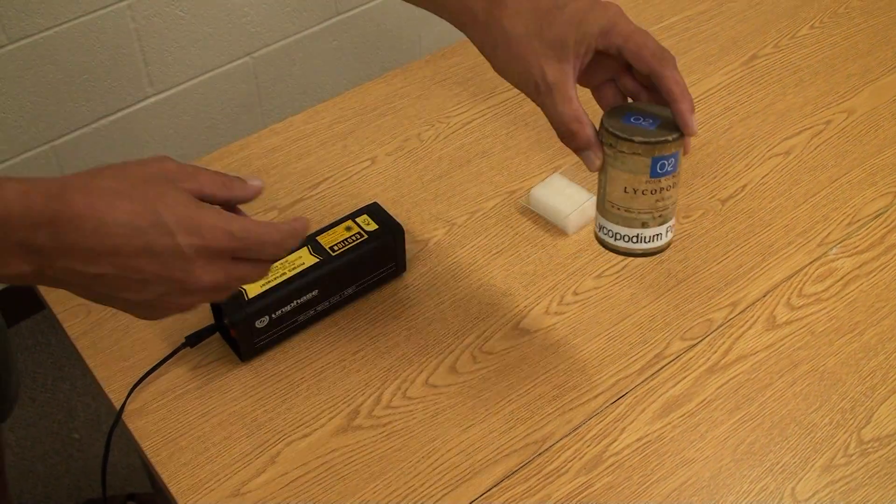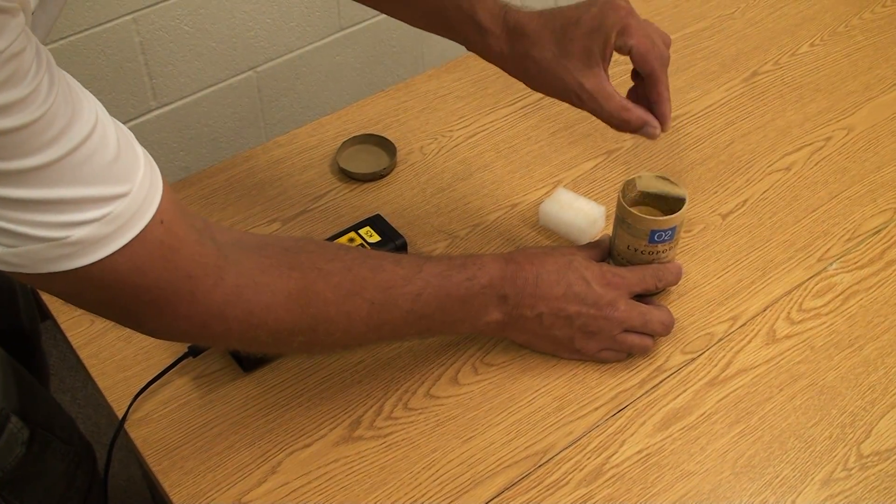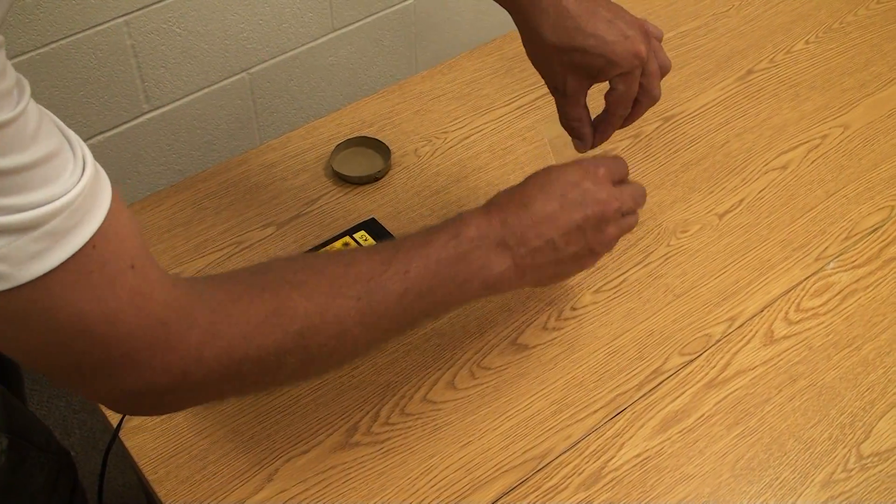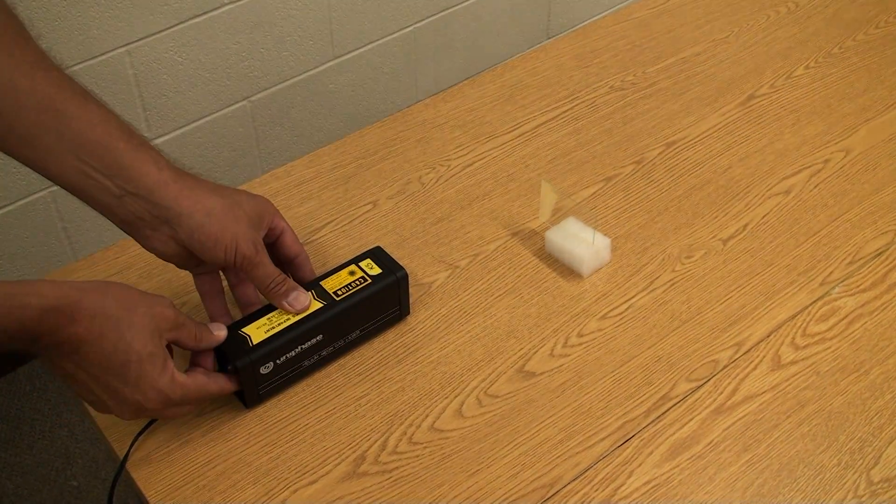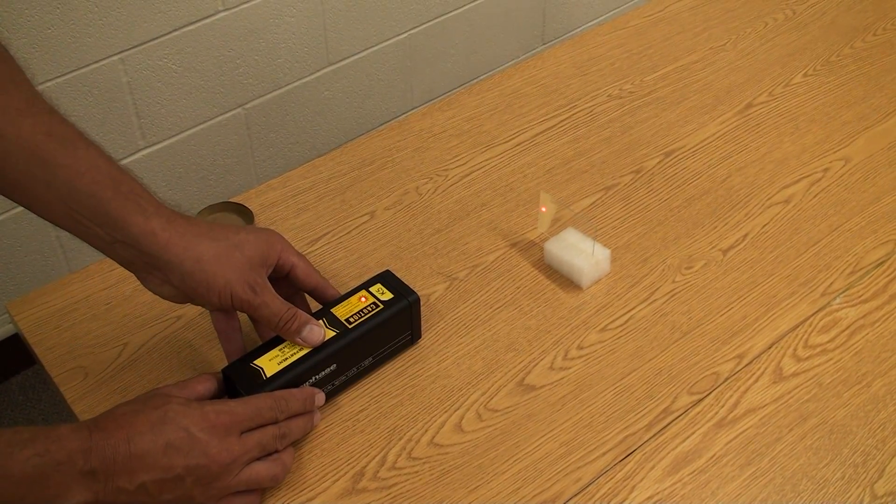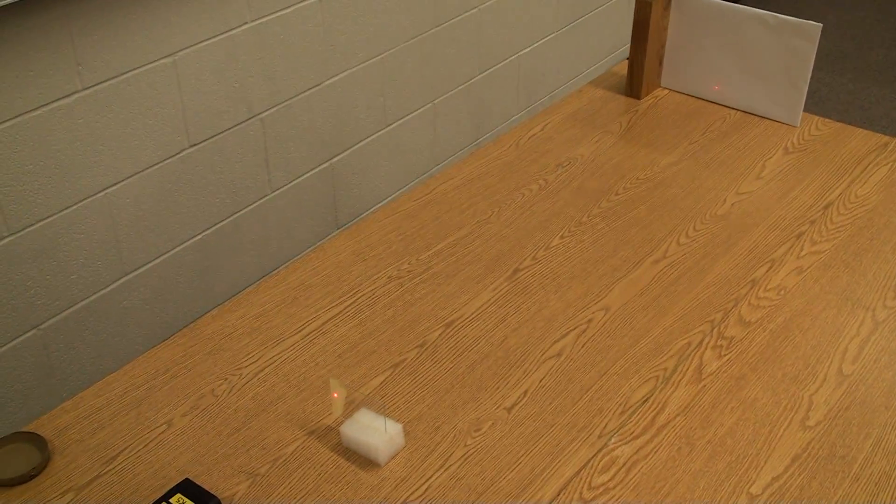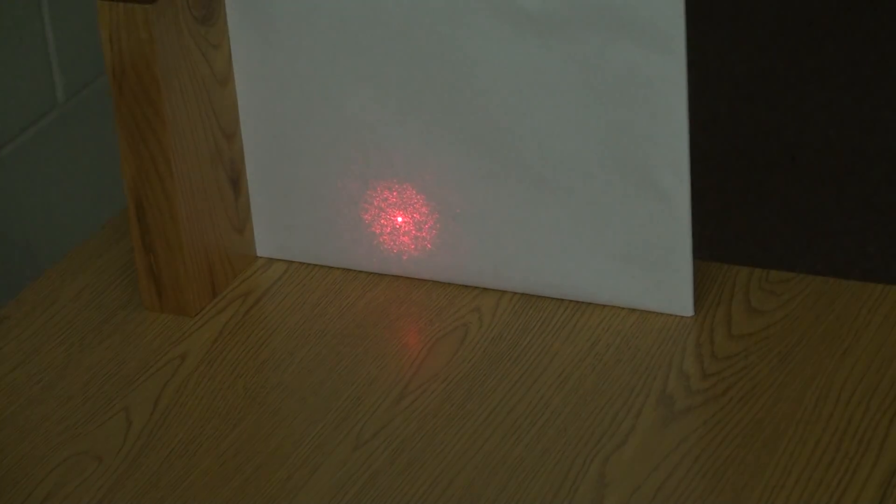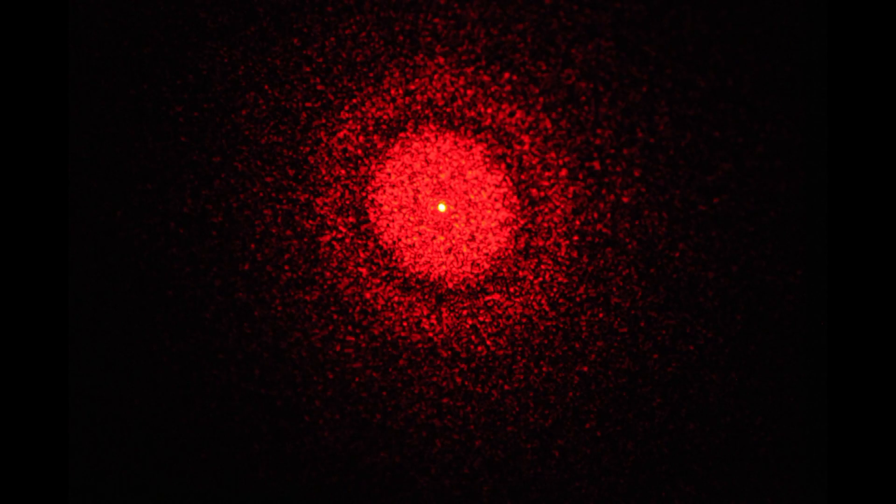Dip the slide into the powder to give it a light coating of spores. Place the slide in the slotted foam, shine the laser through the powder, and the diffraction pattern is viewed on the distant screen. Trace the outer edge of the large bright central region, then measure its radius when you have more light.